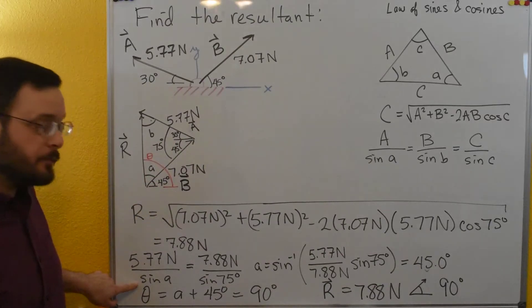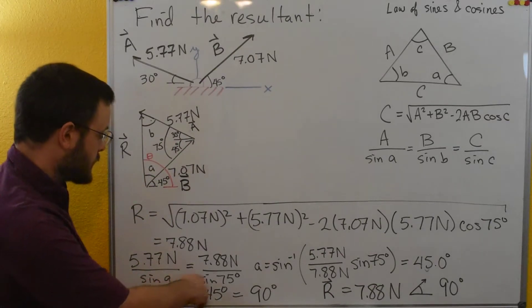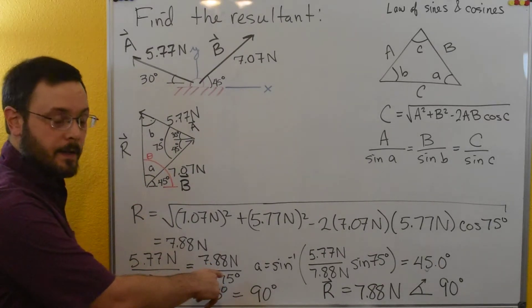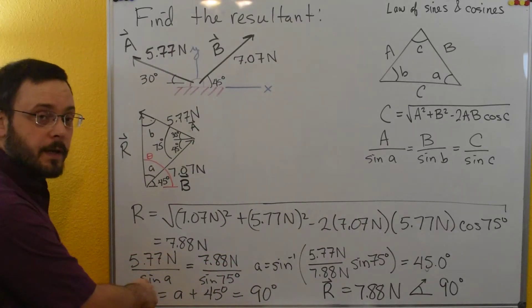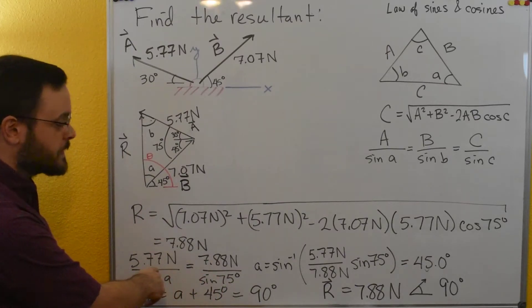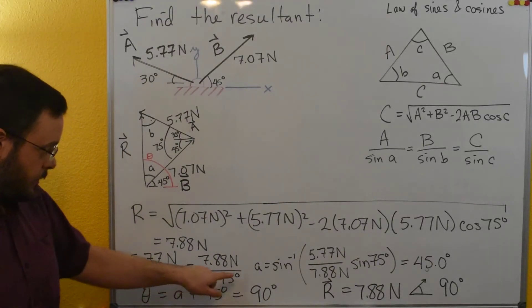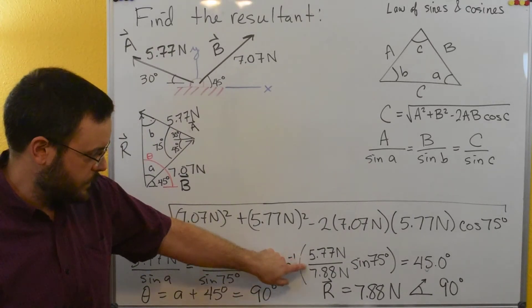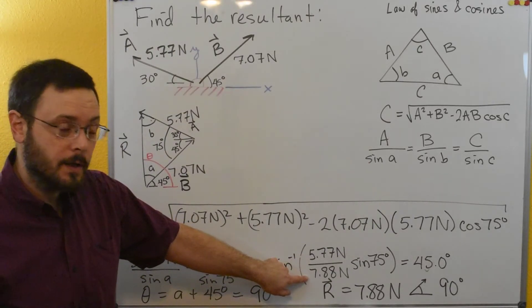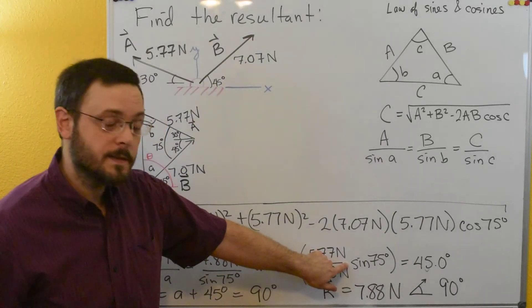I need to solve for a. So I'm going to divide through by 7.88 newtons. Then I'm going to multiply by sine of 75. That's going to give me sine of a is equal to 5.77 newtons divided by 7.88 newtons times sine of 75.